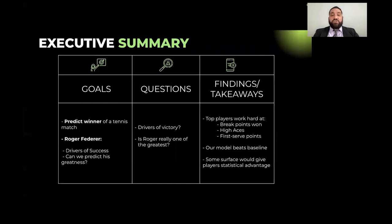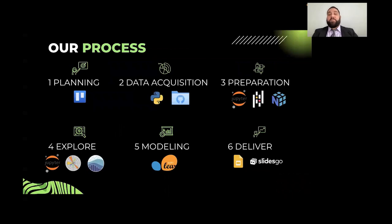For our project, we established two main goals: to predict the outcome of a tennis match and find out what makes a great player. To accomplish our second goal, we focused on Roger Federer, one of the modern greats of tennis. To do so, we asked ourselves what drives the success of a player, and is Roger Federer really one of the best of the last 20 years? In our journey, we found out that players, the top players, will win a lot of their breakpoints, will ace their opponents a lot, and win their first serve points often. For our project, we followed the six steps of data science pipeline. We planned using Trello. We acquired our data using Python and GitHub. To prepare our data, we used Jupyter Notebooks, Pandas, and NumPy. To learn about our data, we leveraged Jupyter Notebooks with Seaborn and Matplotlib. For modeling, we used scikit-learn, and to deliver this presentation, we used Google Slides and SlidesCope.